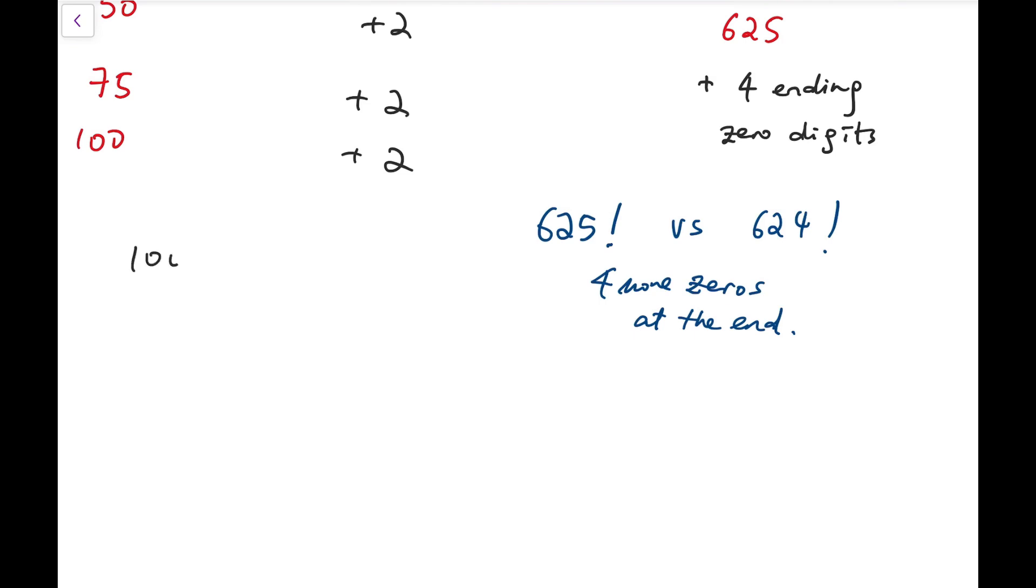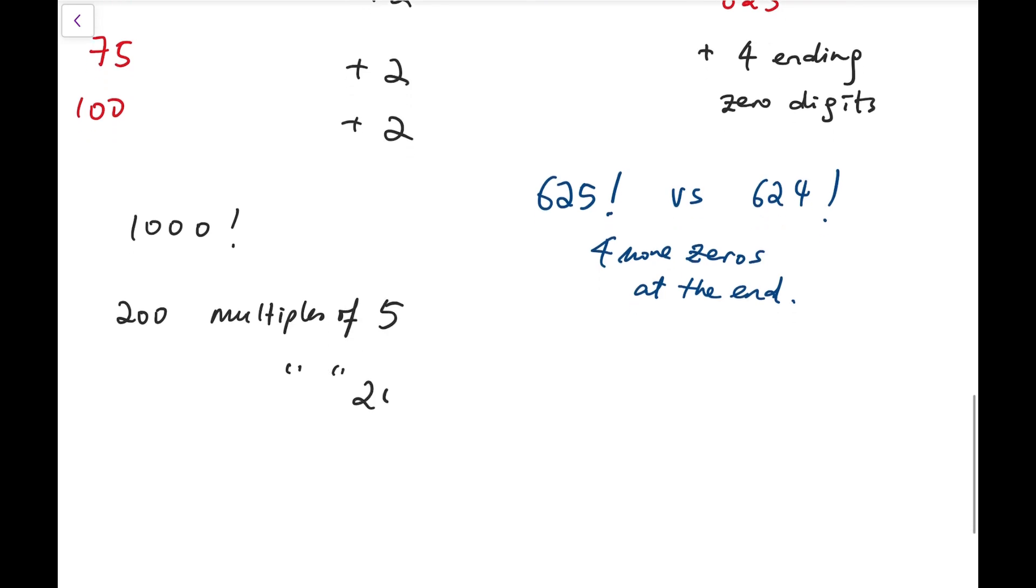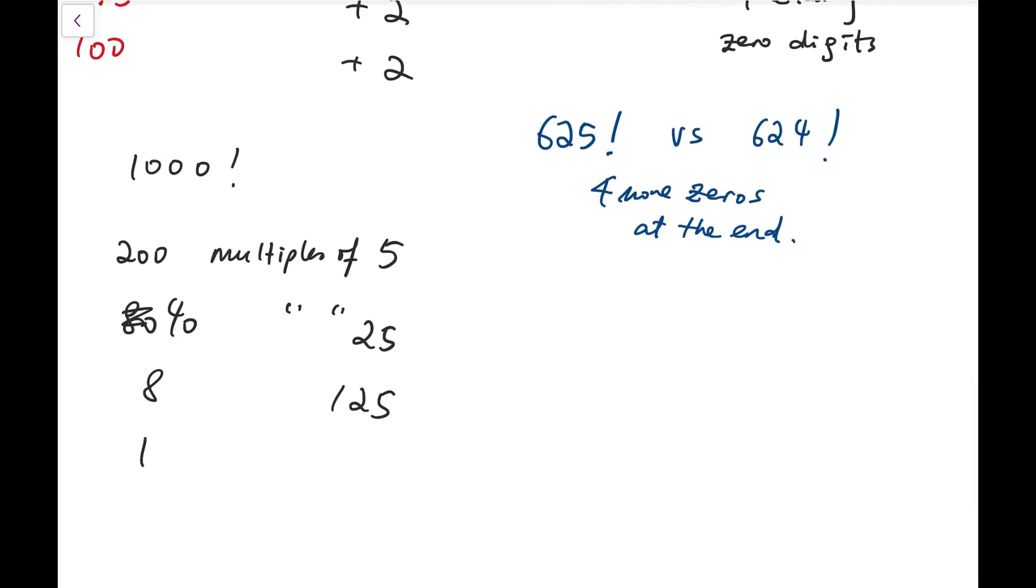So at first, when we are looking at 1000 factorial, we have 200 multiples of 5, and then for 25, we have 40 multiples of 25, and then 8 multiples of 125, and finally just 1 multiple of 625.